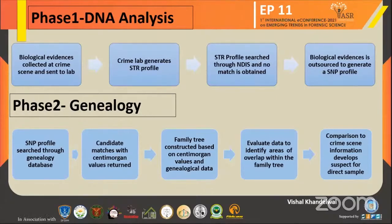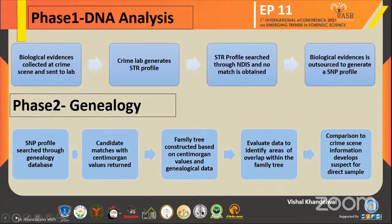SNP profiles means Single Nucleotide Polymorphism — the more frequent variants used in SNP profiling. SNP profiles are run through the genealogy database. If a candidate match with centimorgan values returns, it represents the recombination frequency of the DNA. After that, a family tree is reconstructed based on SNP data. The SNP values are evaluated across three areas: state, local, and national. Comparison of current information then leads to development of a suspect for direct sample.